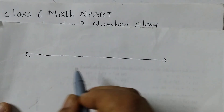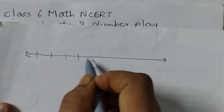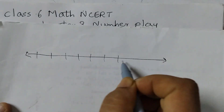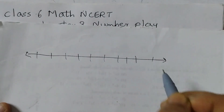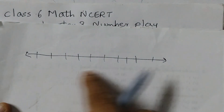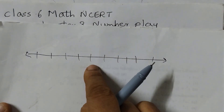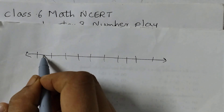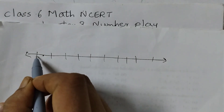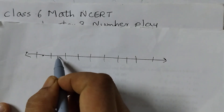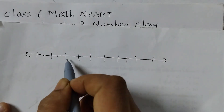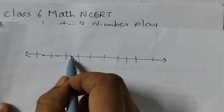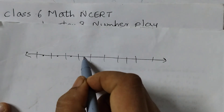Usually there are 10 points given: 1, 2, 3, 4, 5, 6, 7, 8, 9, 10. Proper spacing should be there, and then you mark a midpoint as well — midpoint of these two, midpoint of these two — so it will be easy for you to locate the points.